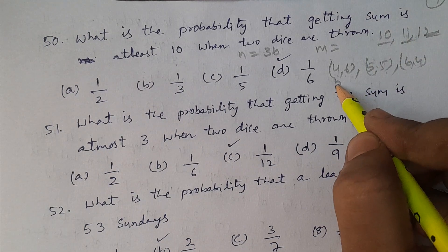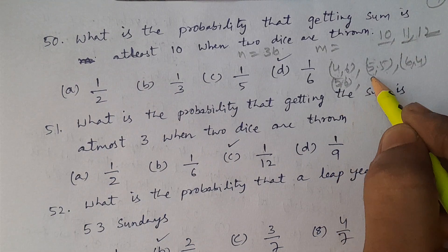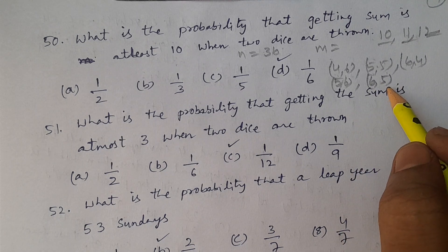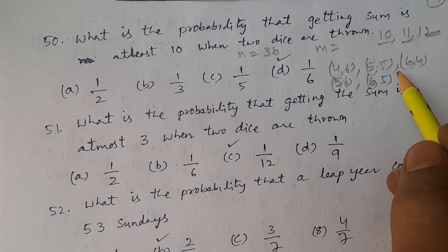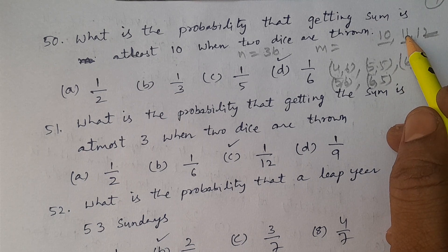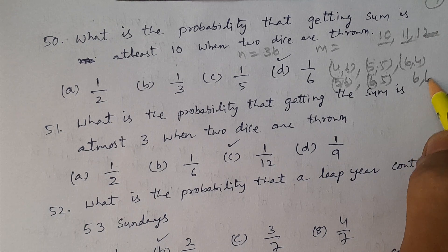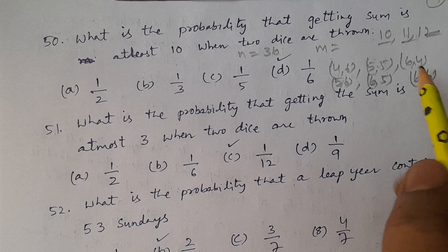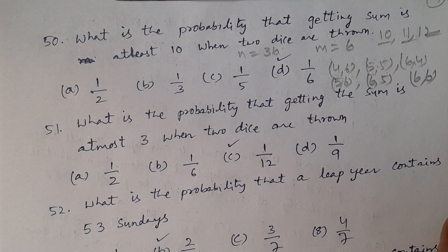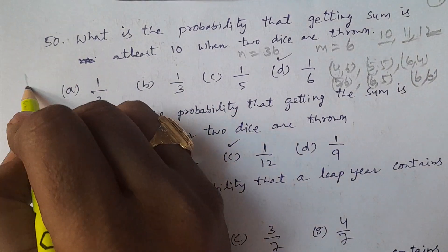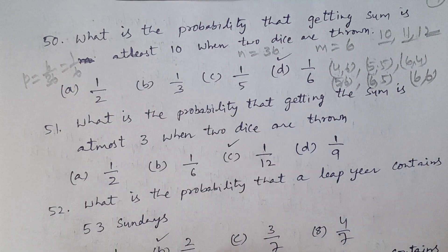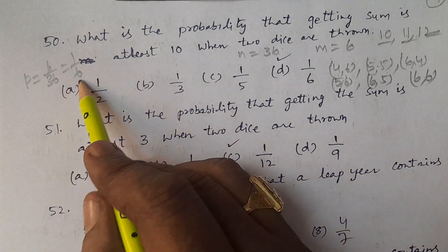For sum 11, the combinations are (5,6) and (6,5) — 2 outcomes. For sum 12, only (6,6) — 1 outcome. So total favorable outcomes m equals 6. The probability P = m/n = 6/36 = 1/6.